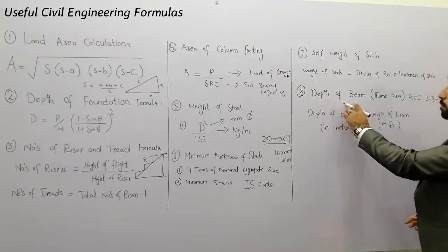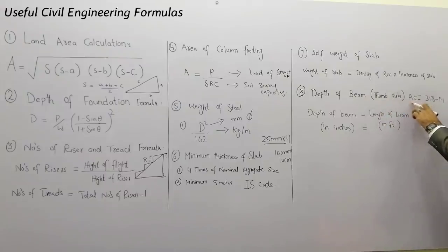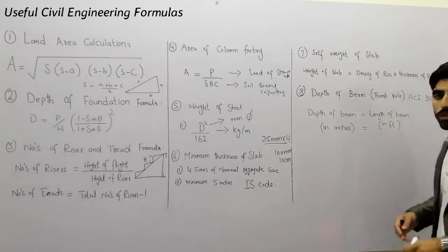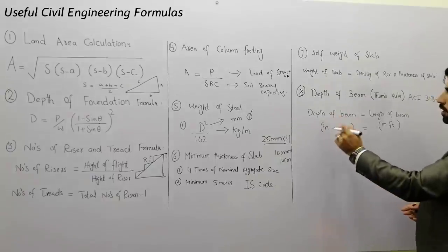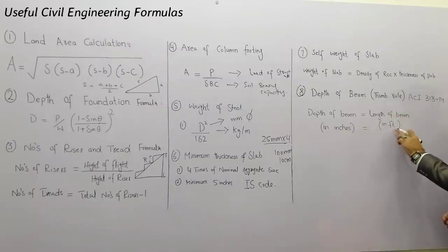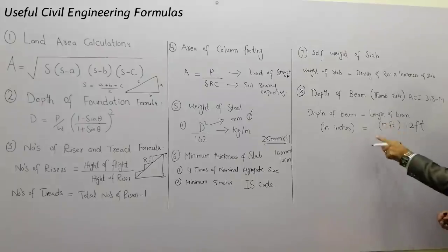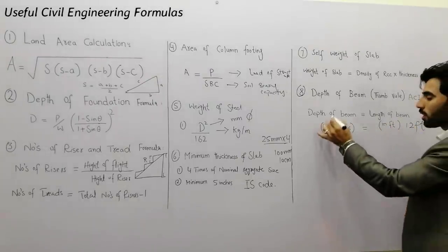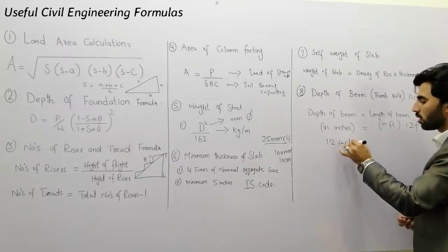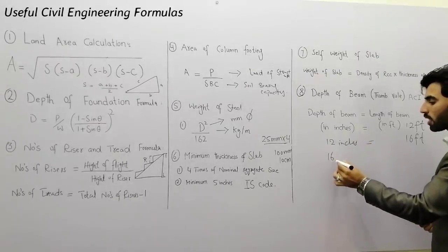The eighth and last formula is for the depth of beam — a thumb rule from ACI (American Concrete Institute) 318-14. The depth of beam in inches is equal to the length of the beam in feet. For example, if the length of the beam is 12 feet, the depth of the beam should be 12 inches. If the length is 16 feet, the depth should be 16 inches.